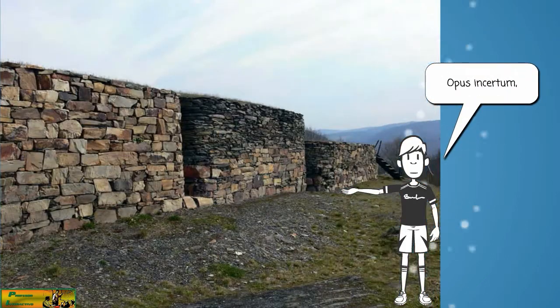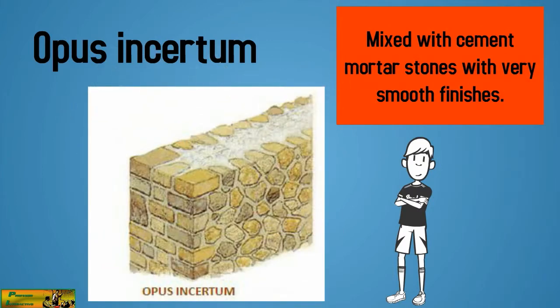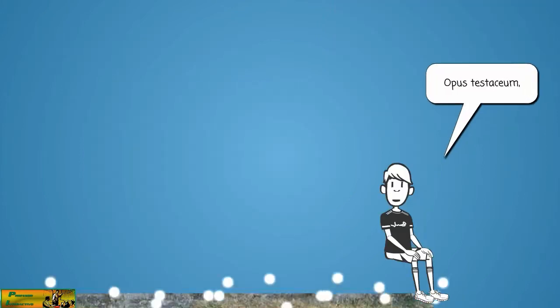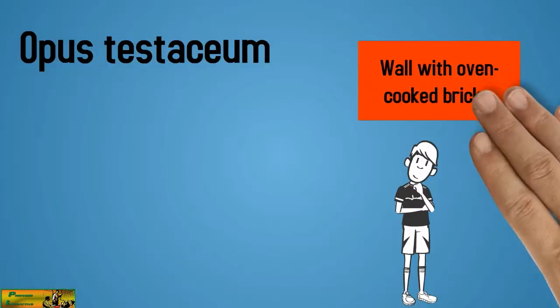Opus Insertum mixed cement mortar stones with very smooth finishes. Opus Testacium consisted of walls with oven cooked bricks.